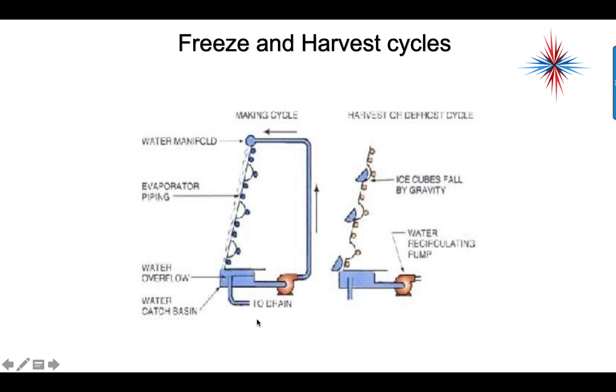This is showing how the harvest cycle works. We put hot gas in, but we start by keeping the water going. The hot gas causes the ice to fall off by gravity.